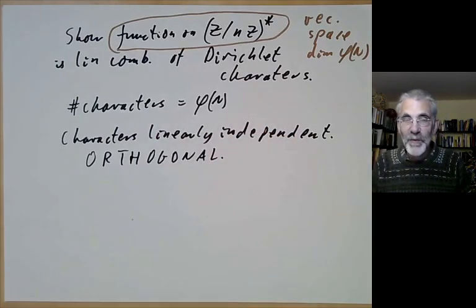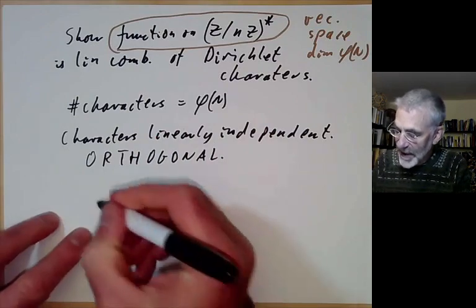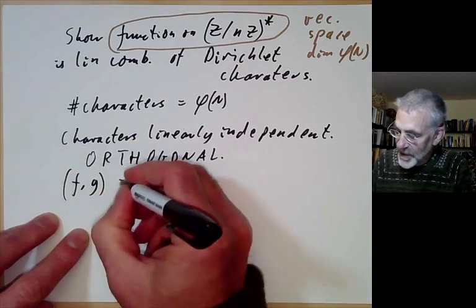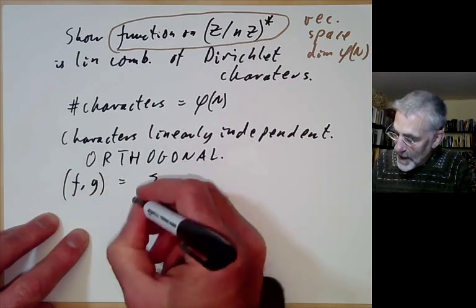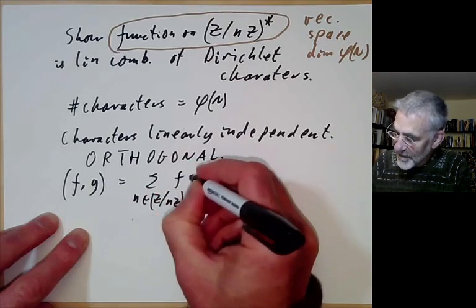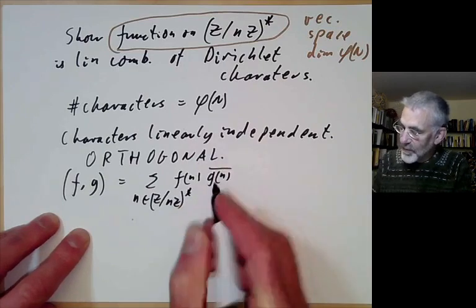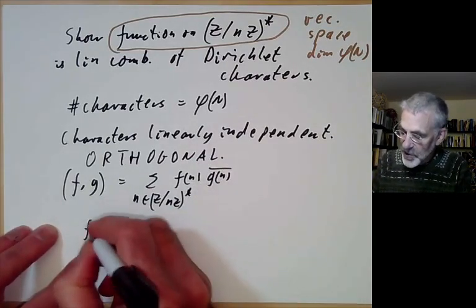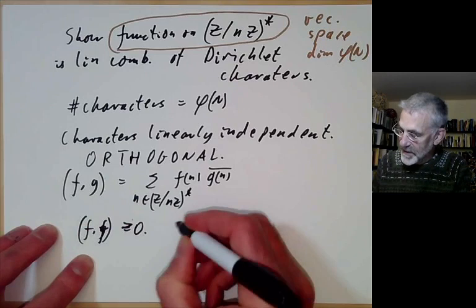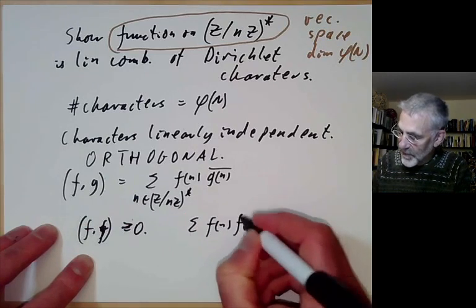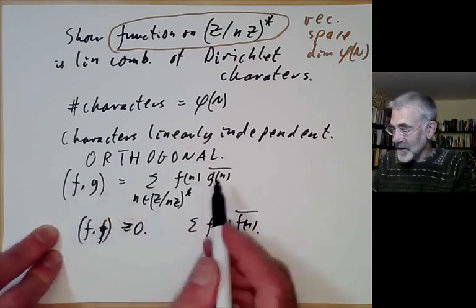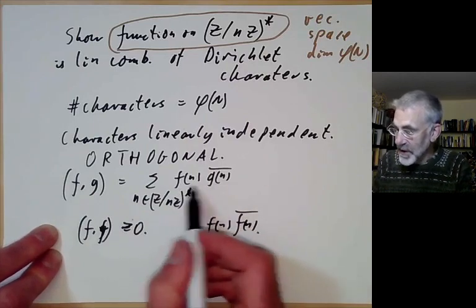To establish orthogonality, we define the inner product of two functions on Z modulo nZ star as the sum over n in Z modulo nZ star of f of n times the complex conjugate of g of n. This ensures the inner product of f with itself is always non-negative, forming a complex vector space with a positive definite Hermitian inner product.